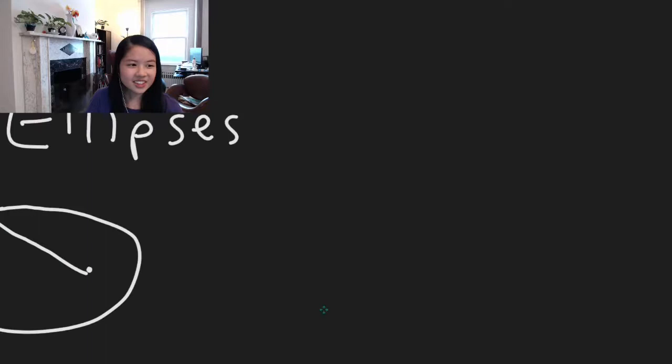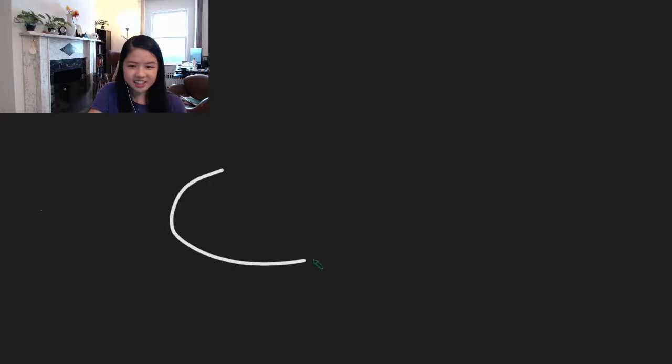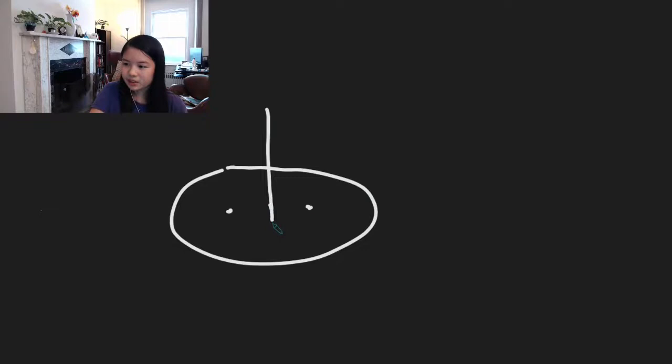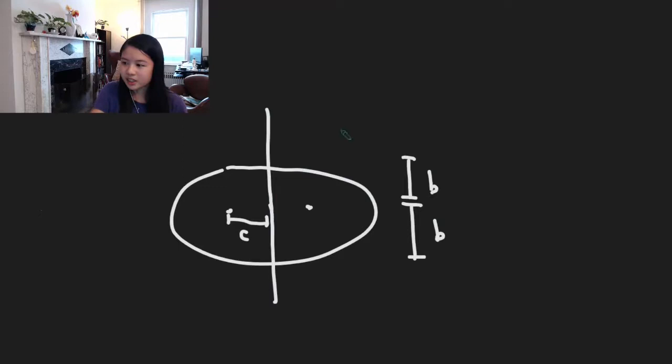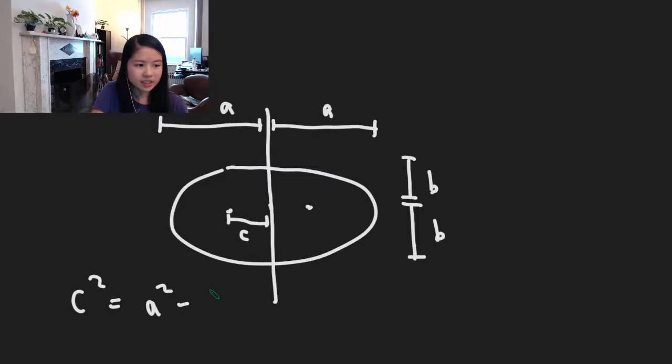That's the definition of ellipses. There are some other cool things though. If I draw an ellipse and this is a line of symmetry, then this length is c, each of these two vertical lengths are b, and each of these two horizontal lengths are a. Then we have the equation c² = a² − b². It's kind of like the Pythagorean theorem but not exactly. You may have seen this in a school textbook.